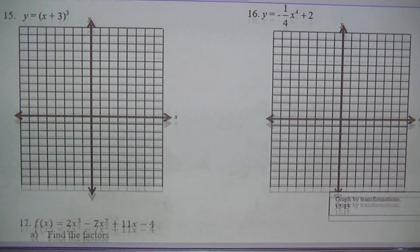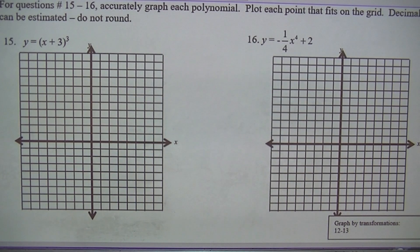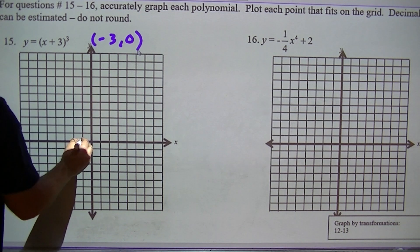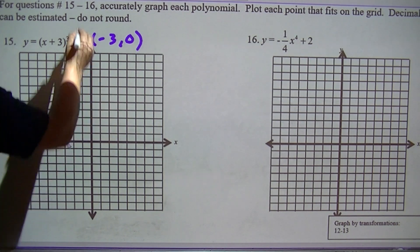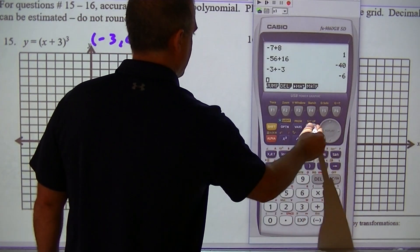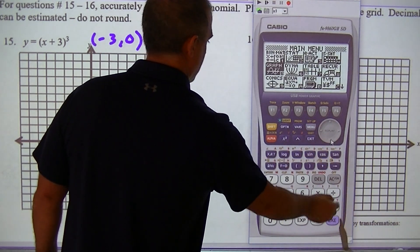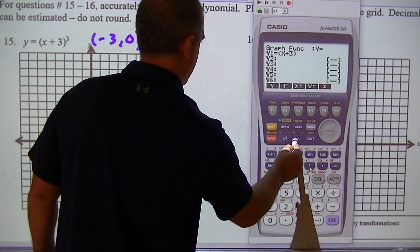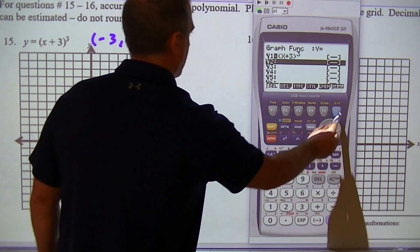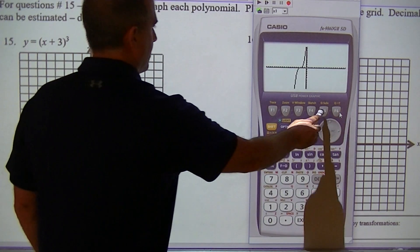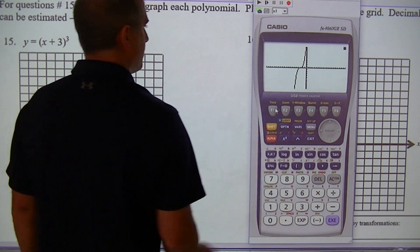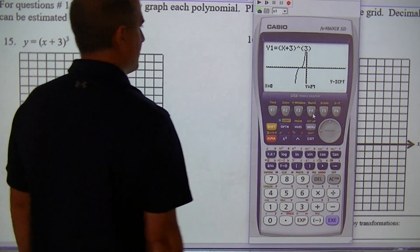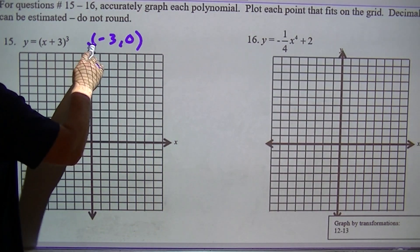To graph these, I graph it just like I normally would. My anchor point is going to be negative 3, 0. I'll graph (x plus 3) cubed in the calculator and draw it — looks like that. G-solve root gives negative 3. G-solve y-intercept: it's all the way up at 27.